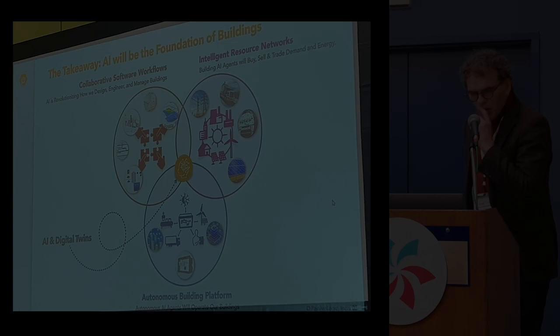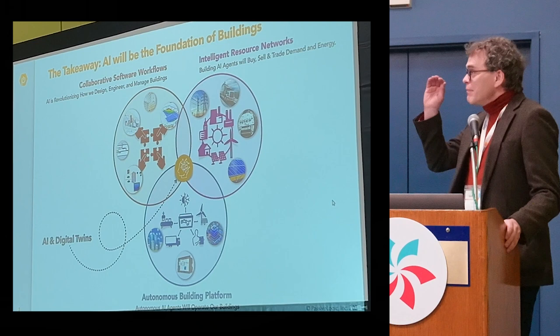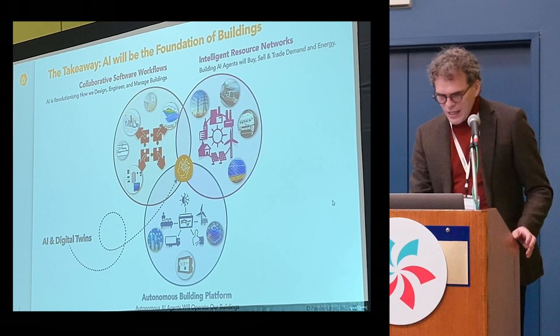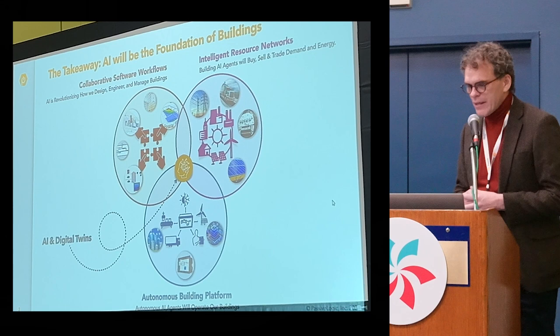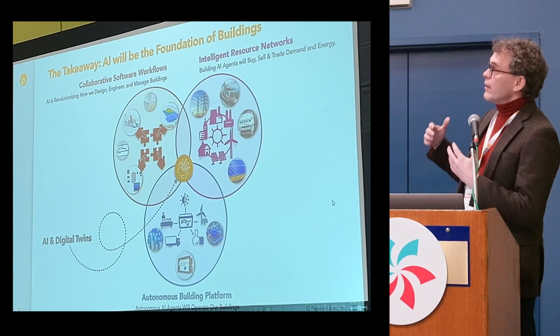I'm going to talk about AI at multiple levels in the business of doing buildings and PassiveLogic. What we're all about is we started the whole company based on two principles: how to bring AI and autonomous systems to the built environment. These are all our technology and research areas, some of the products and software that you've maybe seen at our booth, and what's under the covers driving all of that.